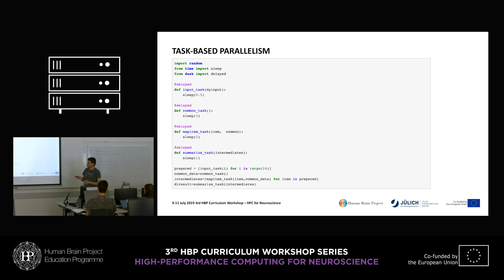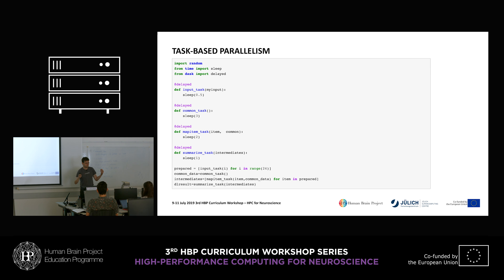I first create 24 input tasks (using a list comprehension). Then my common_data comes from the common task. My intermediates are the map_item tasks, where each takes an item from the input and the common_data, creating a dependency between the item, the common_task, and my map_item. Finally, my summarize task takes all the intermediates as input — so the summary task depends on all other tasks.